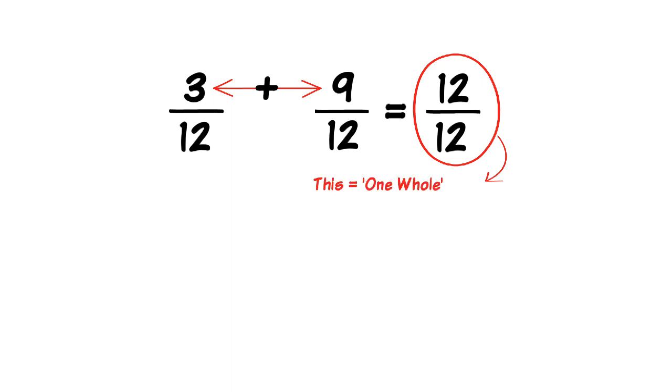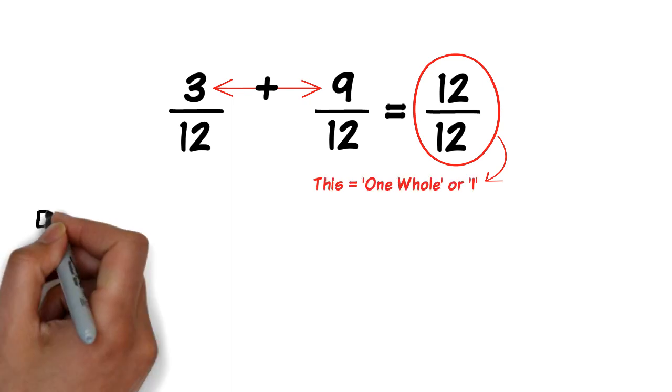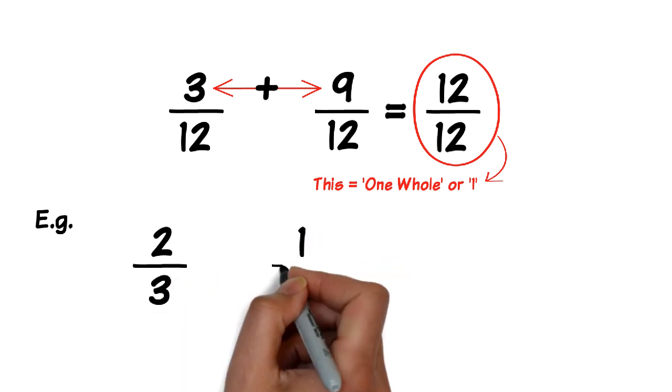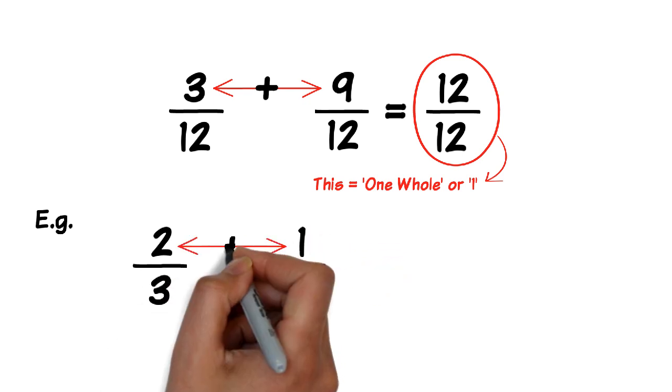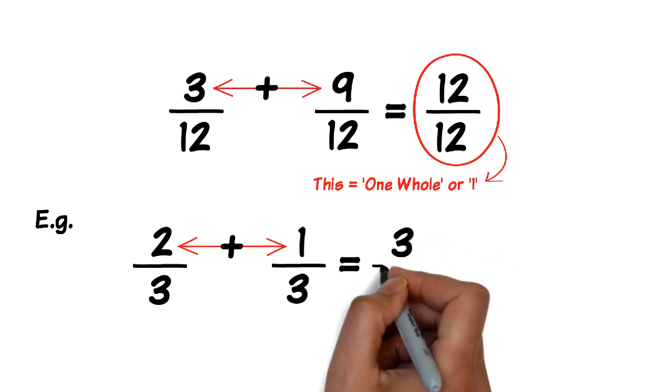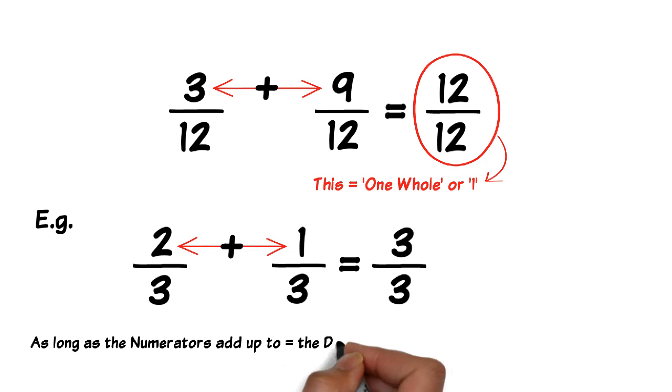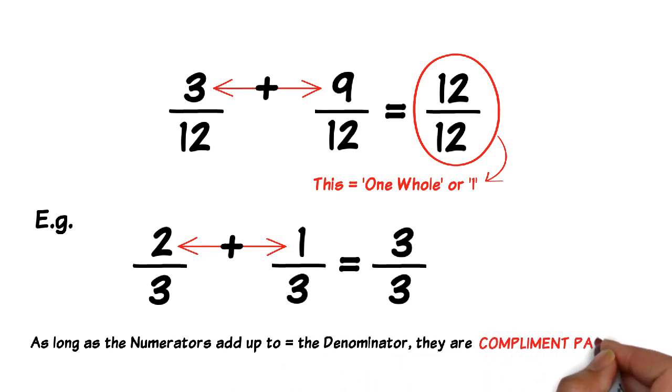Every fraction has a complement or partner that completes it. For example, 2 thirds or 2 out of 3 or even 2 over 3, its complement or its partner is 1 over 3 or 1 third since 2 plus 1 equals 3. So as long as the numerators or the top numbers total up or add up to make the denominator, they are complements or complement partners of each other.